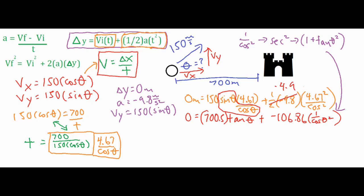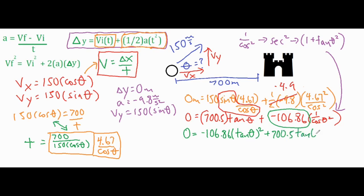Distributing negative 106.86 to the 1 and the tangent squared gives us: negative 106.86 times tangent squared theta, plus 700.5 times tangent theta, minus 106.86. This is now in quadratic form — treat tangent of theta as x, with a tangent squared term and a tangent term. You can use the quadratic formula or graph it and find the x-intercepts.